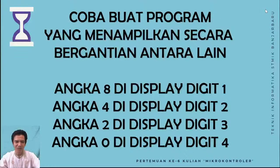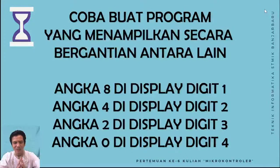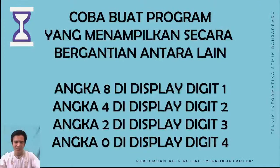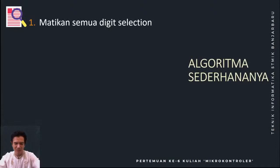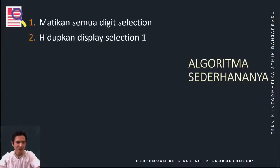Sekarang kita akan coba melihat bagaimana caranya menampilkan angka 8, 4, 2, dan 0 ya. Angkanya sih sembarang saja ini — mau angka berapapun boleh, asal masih bisa ditampilkan oleh display 7 segment. Kebetulan contohnya 8, 4, 2, dan 0. Jadi 8 di digit 1, kemudian 4 di digit 2, 2 di digit 3 dan 0 di digit 4. Nanti kita lihat caranya seperti apa. Kita coba lihat dulu algoritmanya ya — karena kalau membuat program, kalau nanti ujian skripsi itu biasanya yang ditanyakan algoritmanya seperti apa.